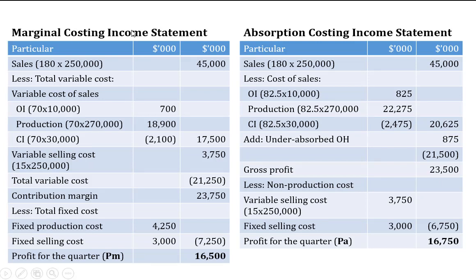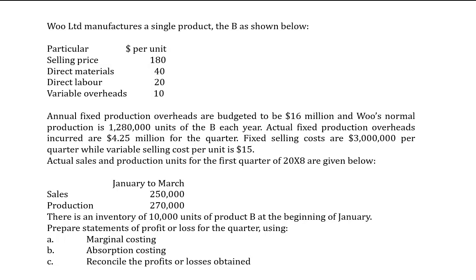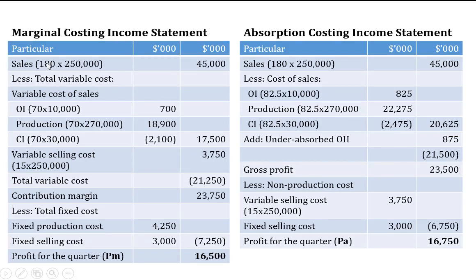We have the marginal costing income statement as well as the absorption costing income statement. The first step when preparing the income statement is to take sales and deduct cost of sales. For the marginal costing system, sales are obtained by multiplying the selling price per unit by the units sold. From the question, sales for January to March were 250,000 units and production was 270,000 units. The selling price is $180 per unit, so sales equal $180 × 250,000 = $45 million.